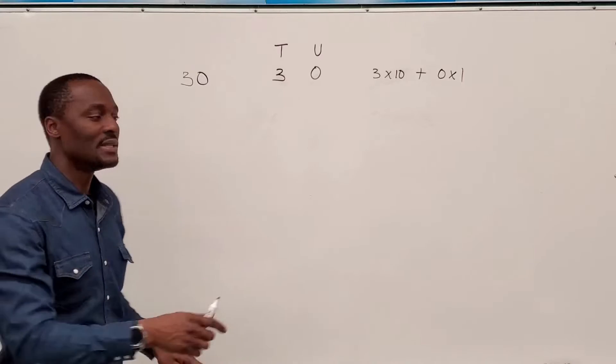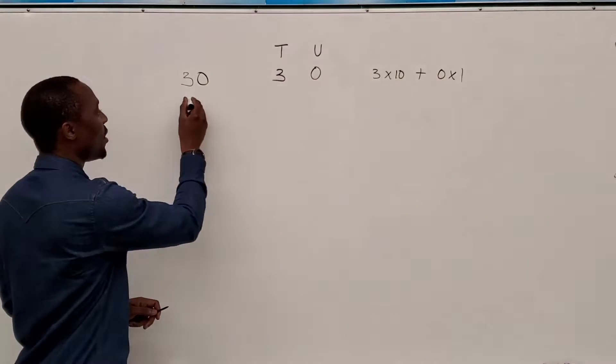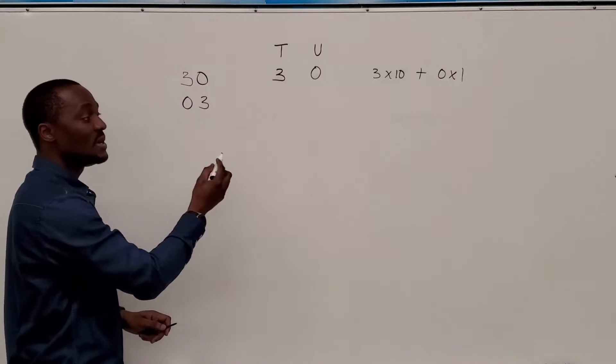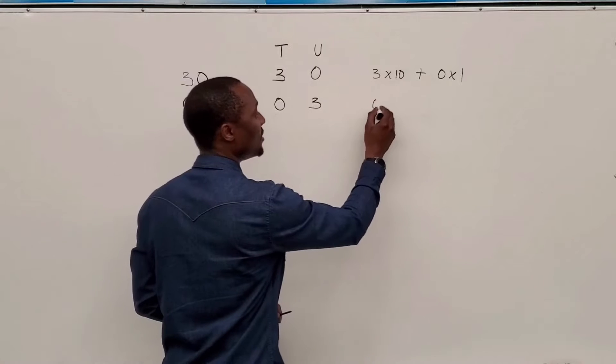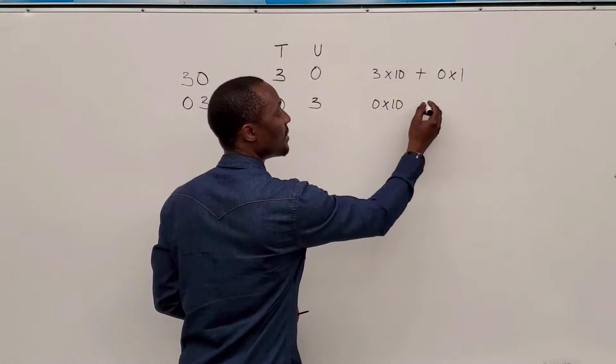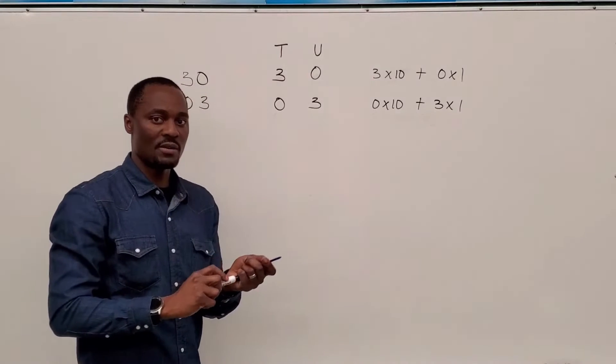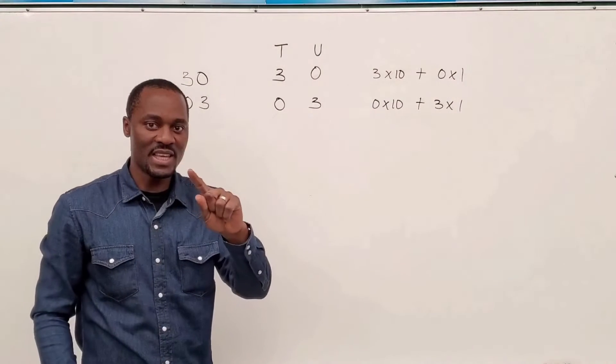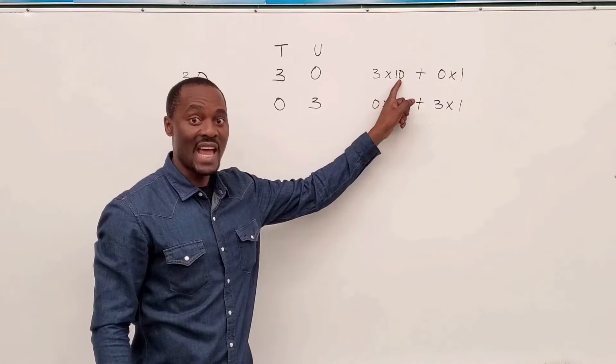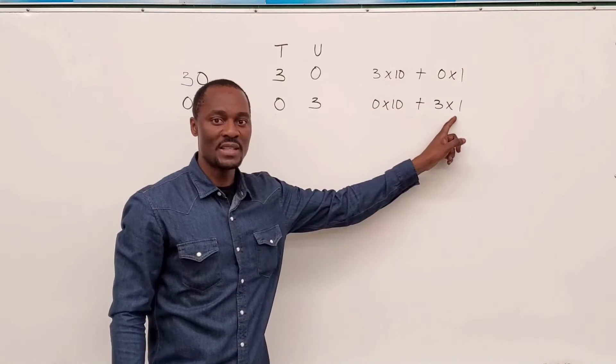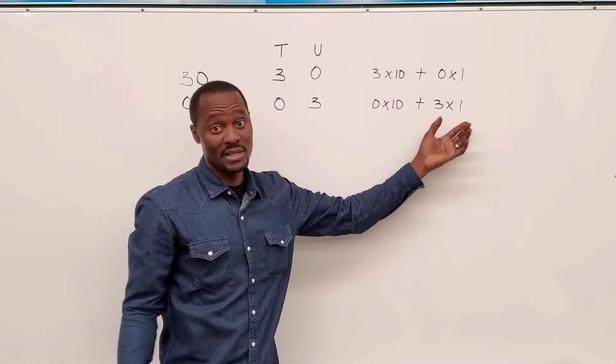But what happens if we decide to switch the numbers to zero three? This means you have zero here and three here, which means zero times ten plus three times one. If you observe, the value of the three has changed. It has changed from three tens to just three units. You've moved it from 30 to three.